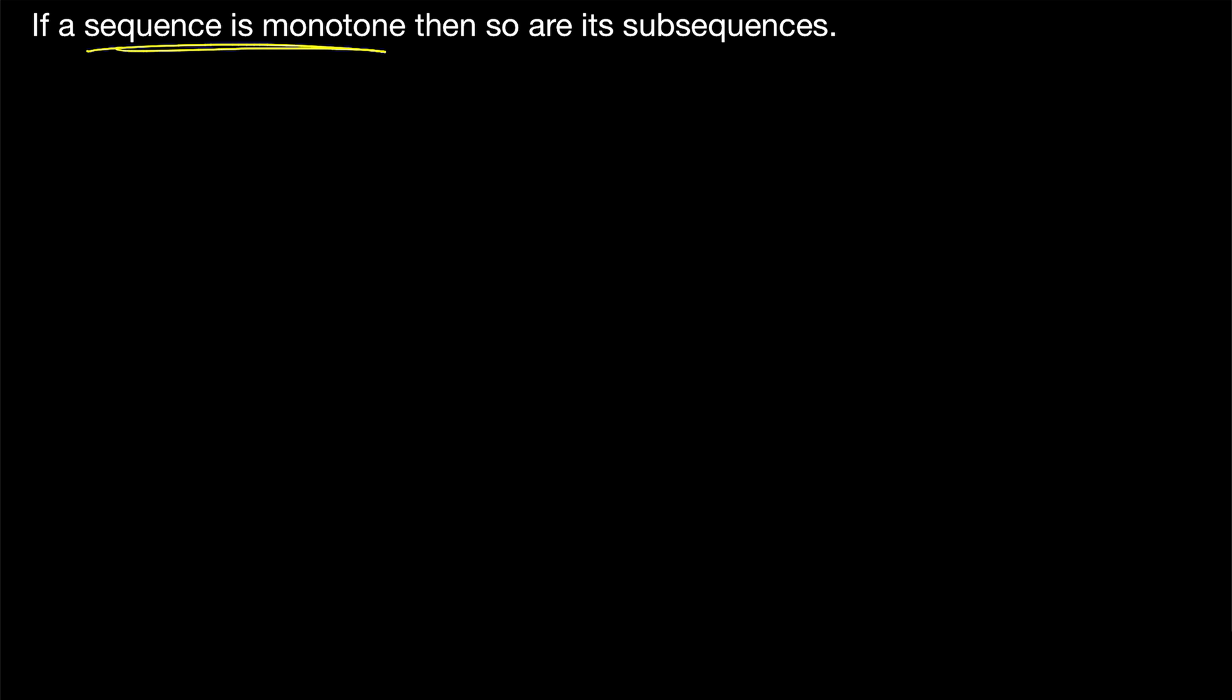And of course, it should make sense, right? If a sequence is monotone and we were to plot the terms of the sequence, maybe it's increasing and it looks something like this. A subsequence doesn't have to include all of these terms, but it can't shuffle them around. One way to think of it is that a subsequence can only skip terms. It can't reorder them, so of course, any subsequence will also have to be increasing.